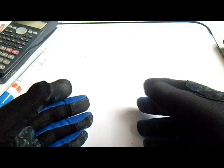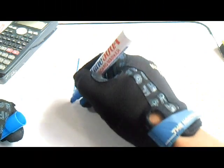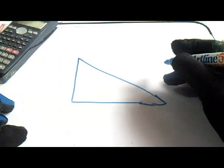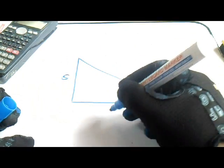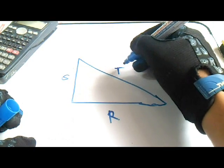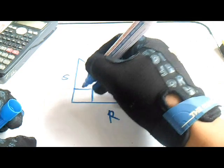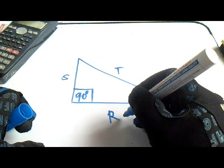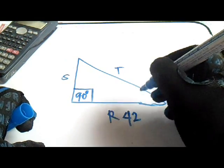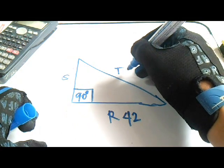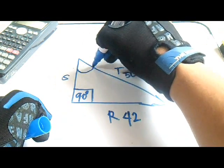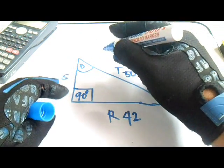Hi! Welcome to Piping, Welding and NDT Channel. I will draw a triangle — this triangle has a set, run, and travel, and this angle is 90 degrees. We have a given: the run is 42 and the travel is 50. Let's try to compute and find the angle D.